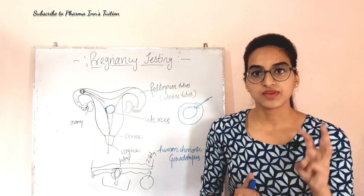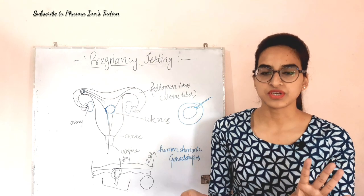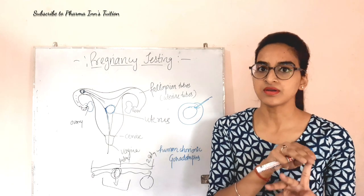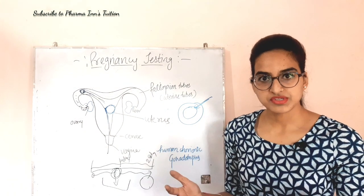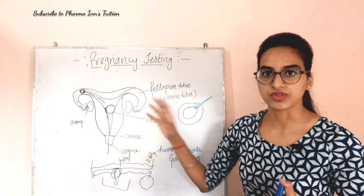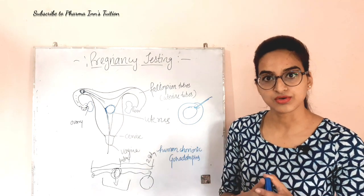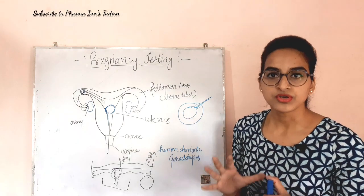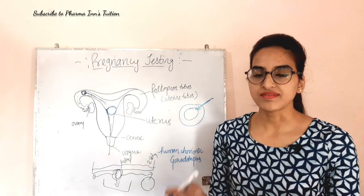Pregnancy is mainly in three trimesters — each of three months, totaling nine months: first trimester, second trimester, and third trimester. The HCG level is the main thing in the first and second trimester. HCG is mainly released from the placenta, but in addition it can be secreted from the pituitary gland and the liver. HCG is the most important hormone to maintain the pregnancy, and when pregnancy is tested, the HCG level is tested.